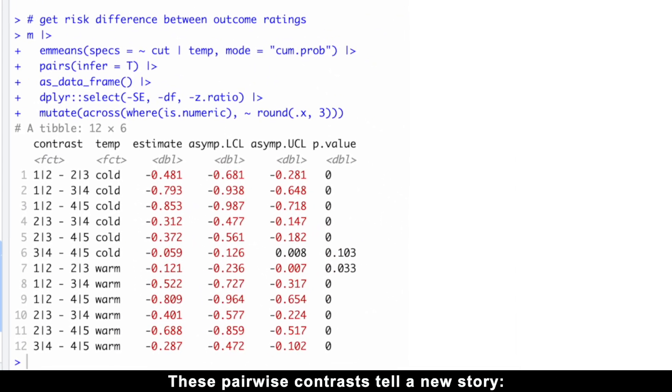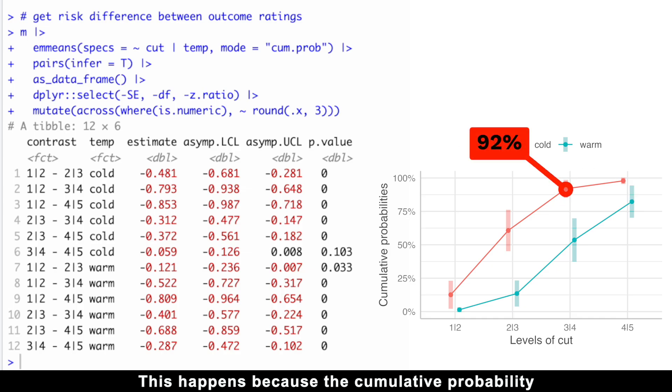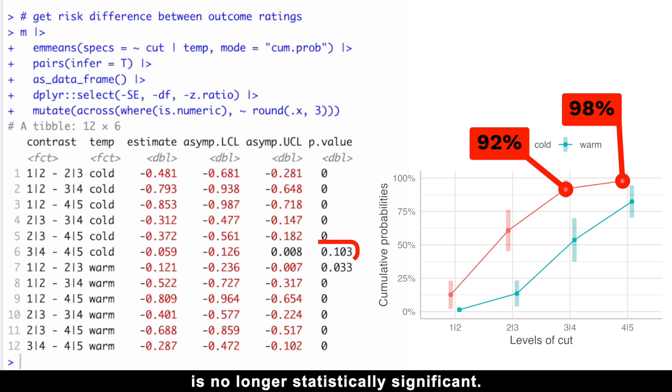These pairwise contrasts tell a new story. For cold wine, the bitterness rating stabilizes at the third level. This happens because the cumulative probability at the third cut point, 92%, is already so high that any further increase to 98% at the fourth cut point is no longer statistically significant.